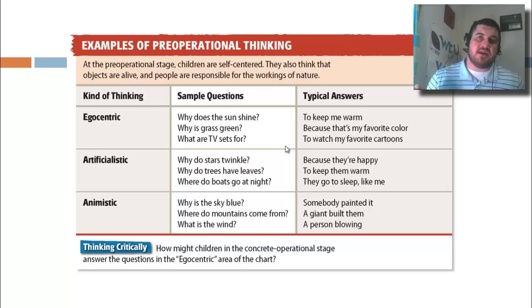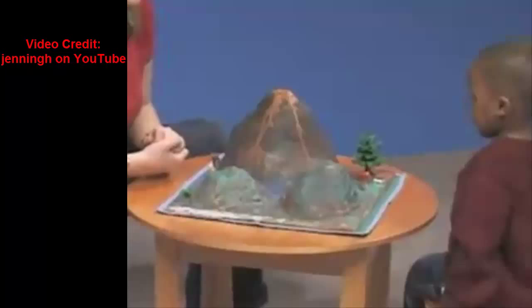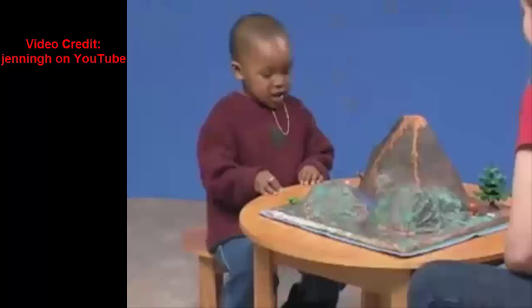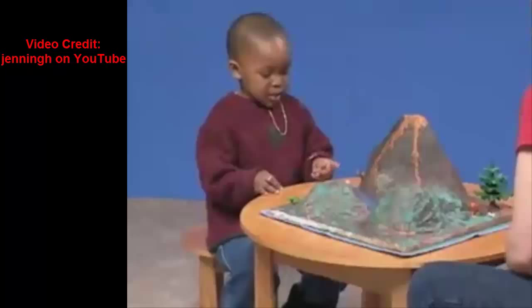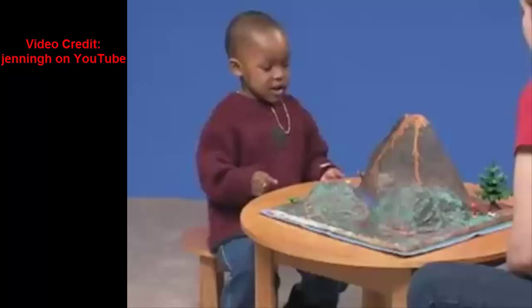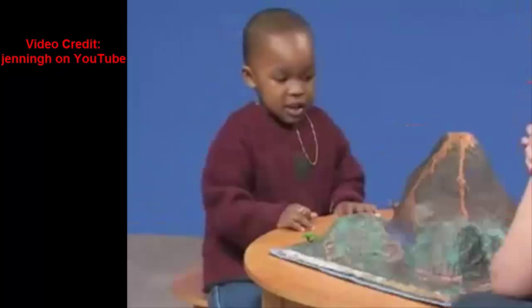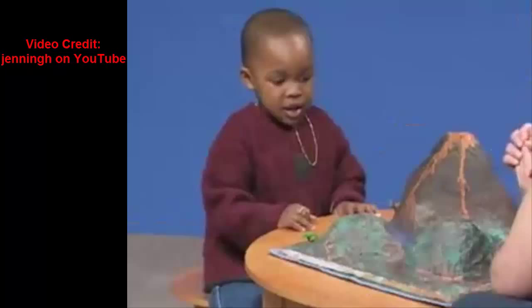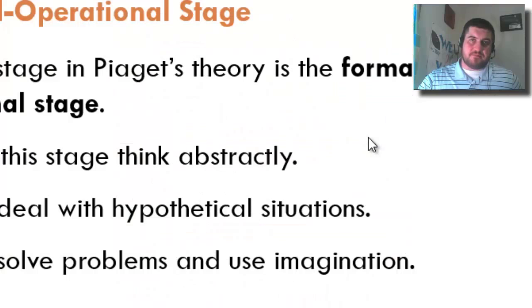An egocentrism experiment is shown: a child is asked what they see from their seat — a cat, a tree, a barn. Then from a different stool, they see an owl, a hen, a goat, and trees. When asked what the experimenter sees from their own seat, the child still describes only what they themselves can see — an owl, a goat, and a little tree — demonstrating that they cannot yet take another person's perspective.